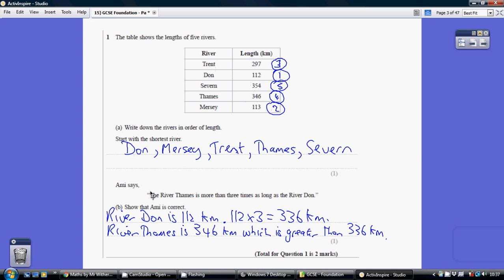Now, Amy says the River Thames is more than three times as long as the River Don. Show that Amy is correct.